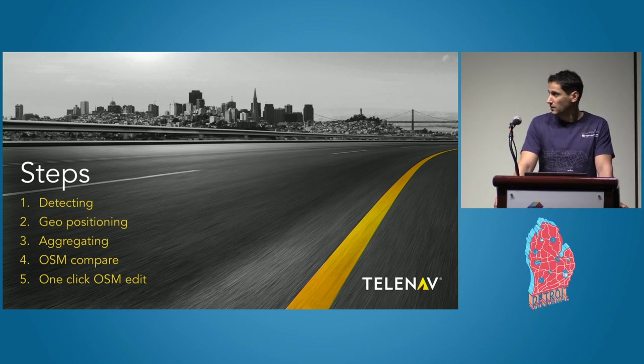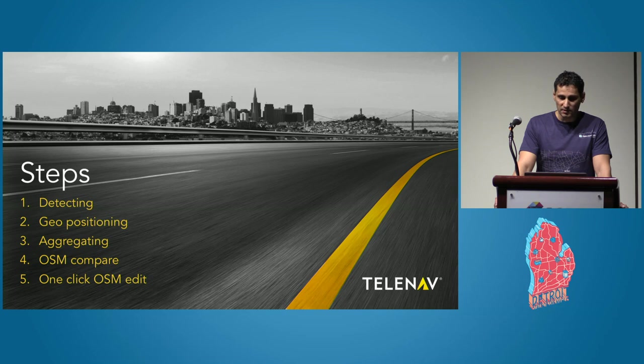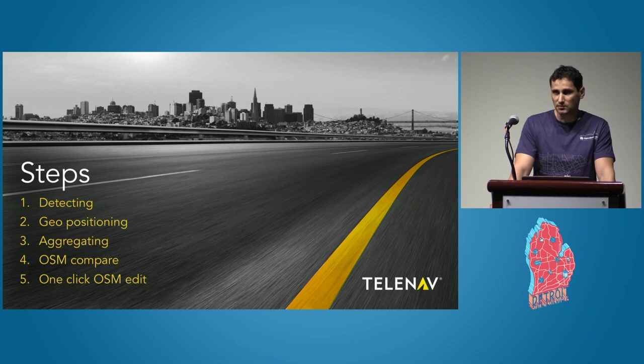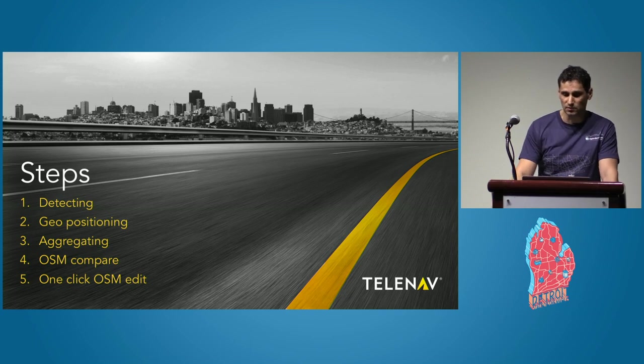It remains to find the best way to reach it. For that, we have identified the following five steps: detecting objects of interest in the pictures, mainly traffic signs; geopositioning the detected traffic signs; aggregating detections from multiple trips; comparing aggregated detections with OSM; and if not, easily edit OSM with only one click.